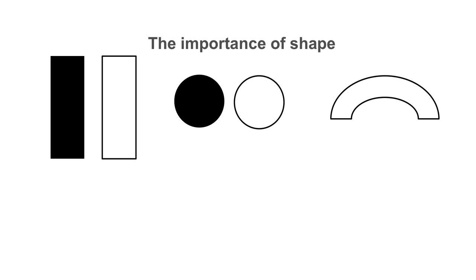Shapes that can be identified on x-ray are rectangles — both black and white — circles — both black and white — and white arches.